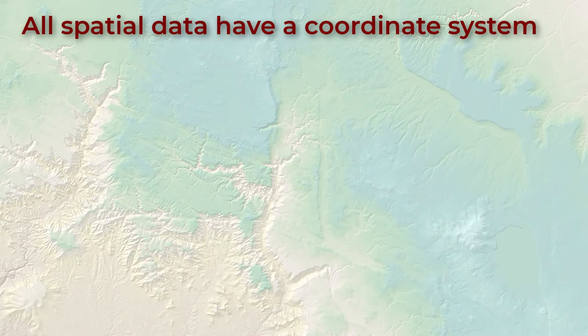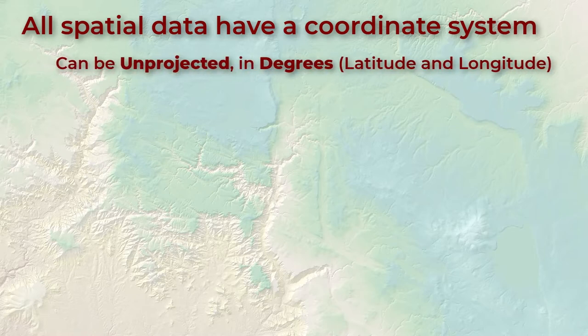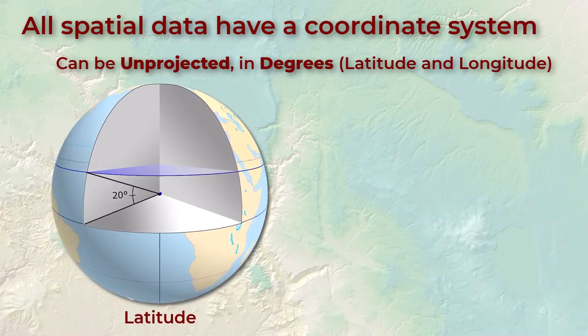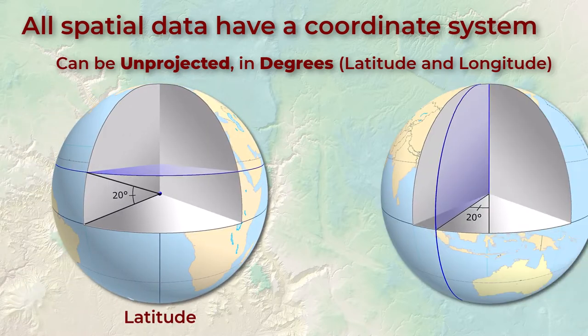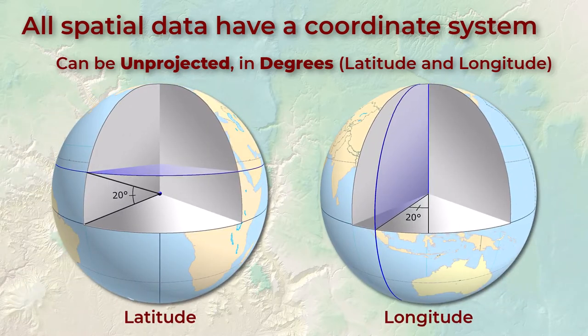First, all spatial data have some coordinate system — that's what makes them spatial. And if that system is on the curved surface of the planet then it's considered unprojected, and the coordinate units are in degrees. Latitude measures the angle from the equatorial plane.